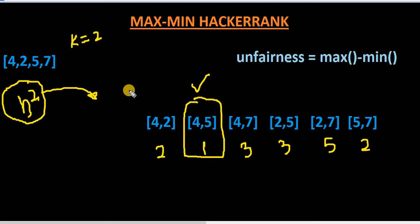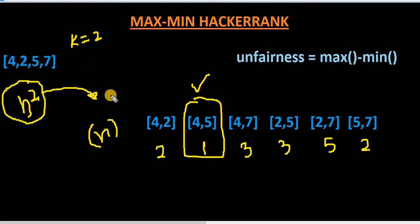With this naive approach, we first use O(n²) to find all subsets, and then we loop through them again to compare. The number of subsets is always more than the number of elements, making this an O(n² + n) approach. We want to optimize this. Let's now take another example with k equal to 3.